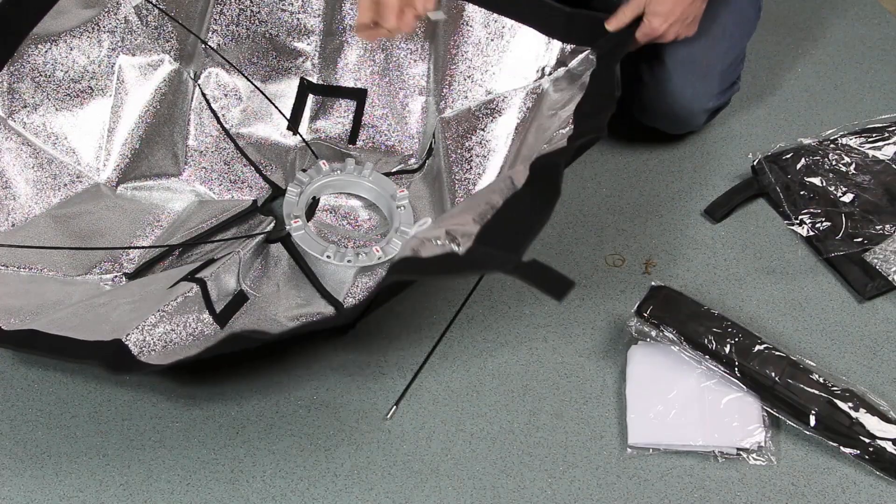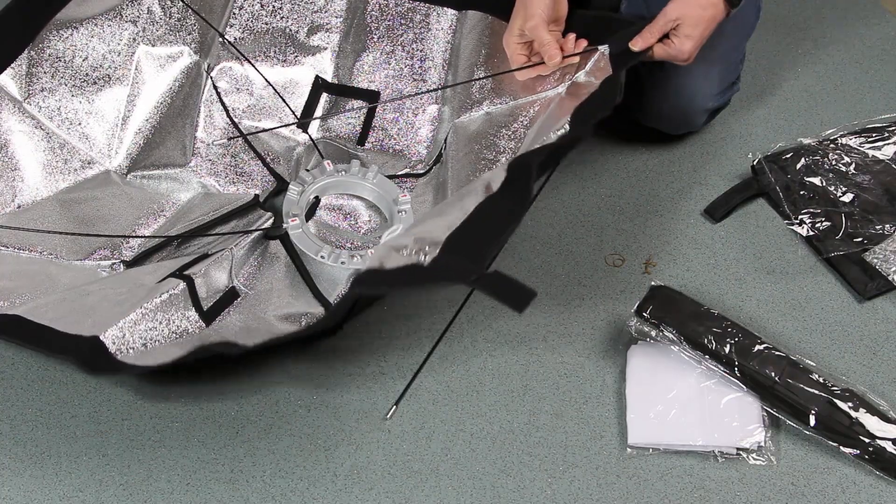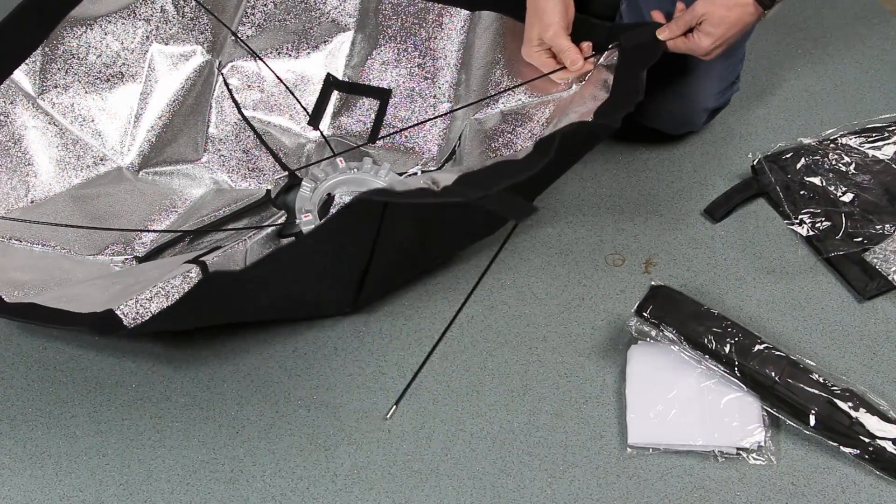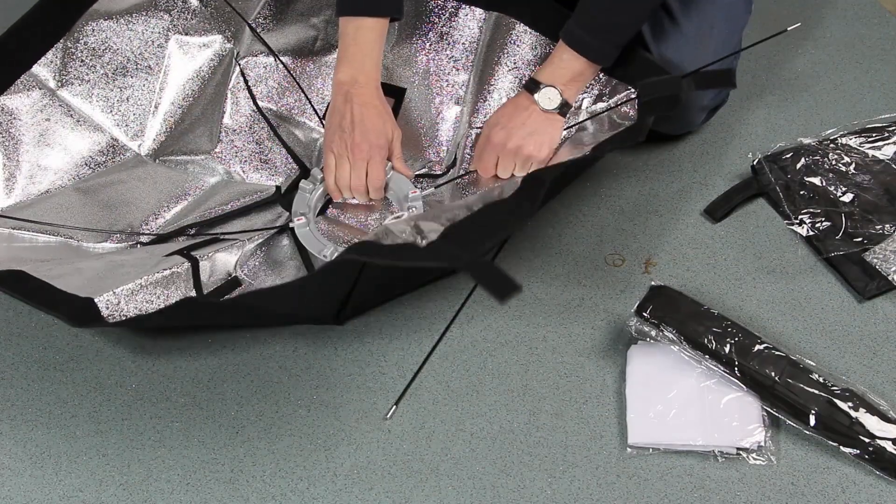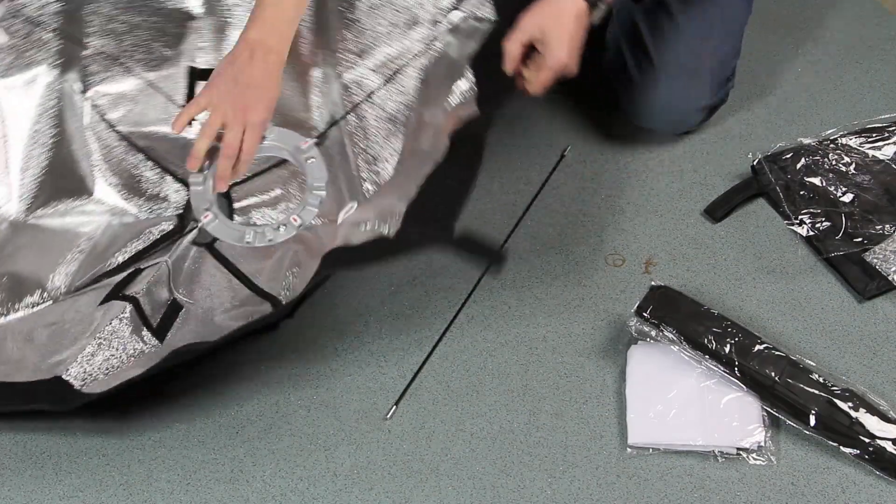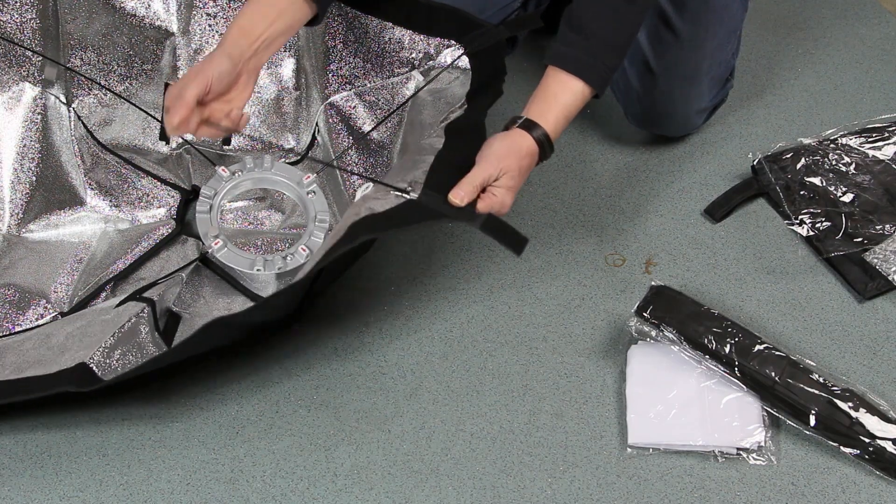On the other two pockets there's a velcro flap that you open out. You push the rod through and then fit the other end into the speed ring. You do this again with the other rod. On the 140 centimeter octagonal, obviously there are more rods.